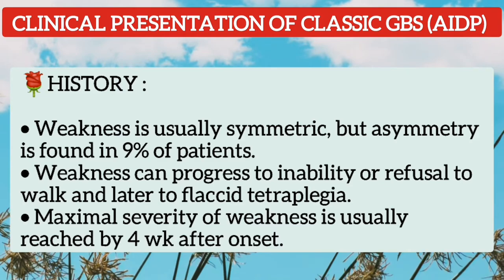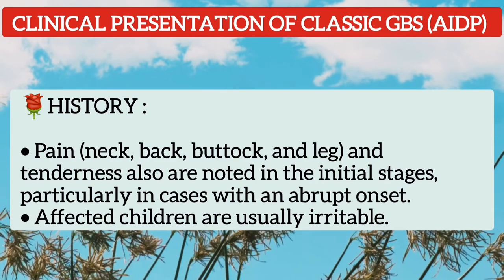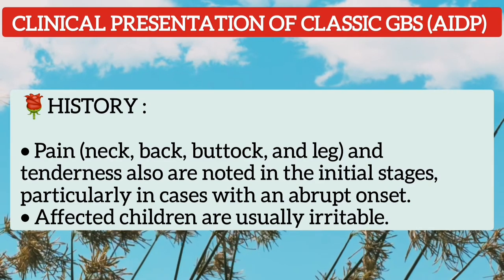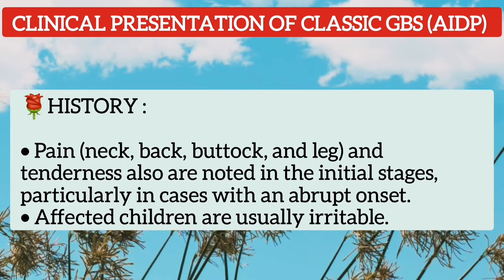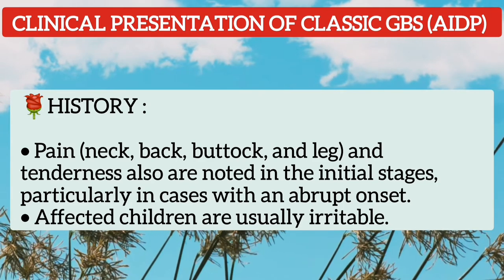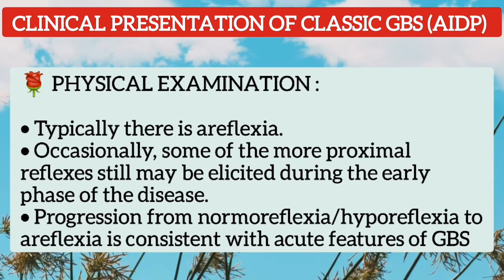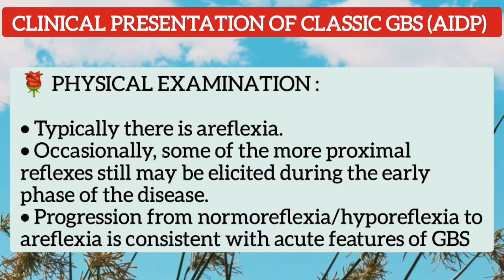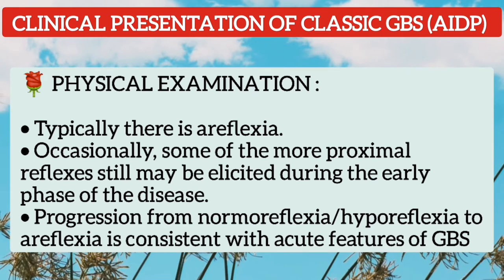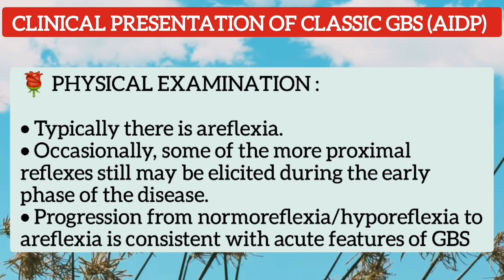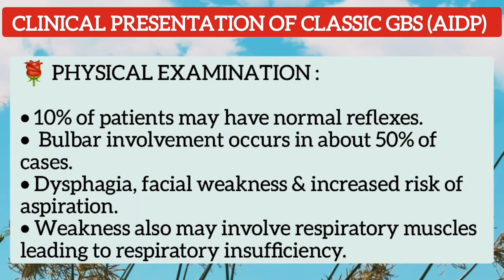Maximal severity of weakness is usually reached by 4 weeks after onset. In initial stages, particularly in cases with an abrupt onset, pain in the neck, back, buttock, and leg, along with tenderness on palpation, may be present. Affected children are usually irritable. On physical examination, there is typically areflexia, though some proximal reflexes may be elicited during the early phase. Progression from normoreflexia or hyporeflexia to areflexia is consistent with acute GBS. About 10% of patients have normal reflexes.